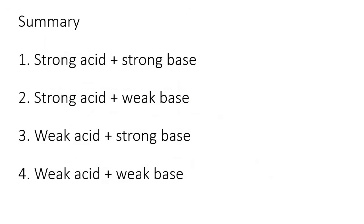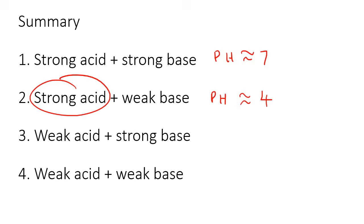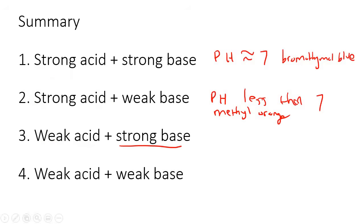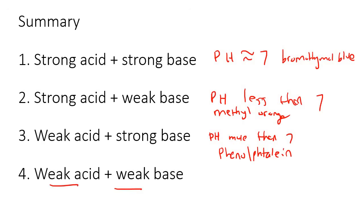In summary: strong acid plus strong base — pH about 7, use bromothymol blue. Strong acid plus weak base — acid dominates, pH less than 7, use methyl orange. Weak acid plus strong base — base dominates, pH more than 7, use phenolphthalein. And weak acid plus weak base — they cancel each other out, pH equals 7, so you could use bromothymol blue again.